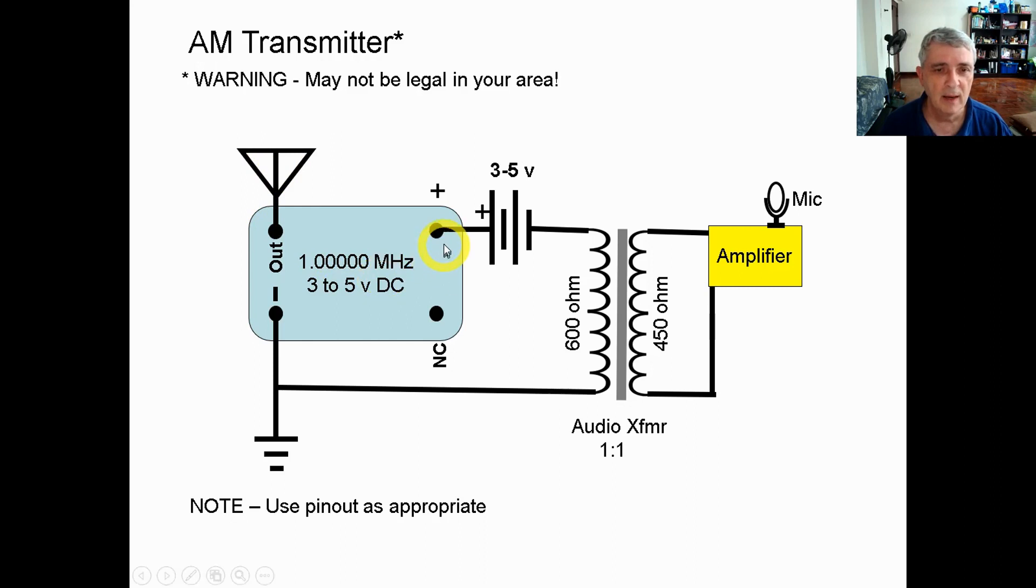Now going back through this way, we have our battery which is supplying a nice DC signal, and that DC signal is passing through this audio transformer on one side. On the other side, when we talk into the microphone, we're going to get an AC signal passing through the opposite side of the audio transformer.